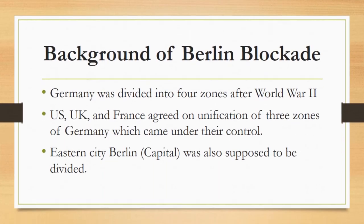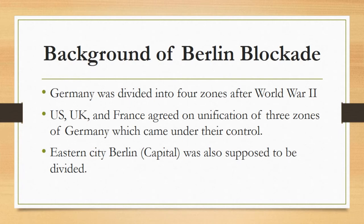Background of the Berlin Blockade: At the end of World War II, the United States, Britain, France and the Soviet Union divided the defeated Germany into four occupation zones, as outlined at the Yalta Conference in February 1945 and formalized at Potsdam later that year. The US, UK and France agreed on the unification of their three zones of Germany. In this way, Germany was now divided into two parts — Western Germany and Eastern Germany. Western Germany was under the control of the United States, UK and France, whereas Eastern Germany was under the control of the USSR.